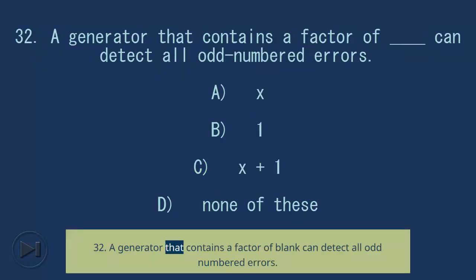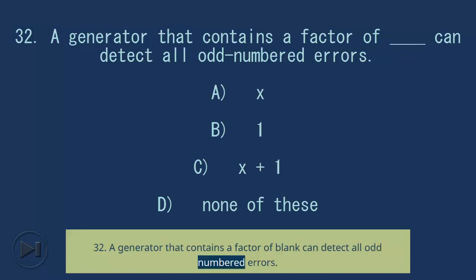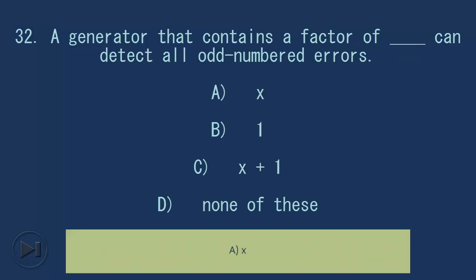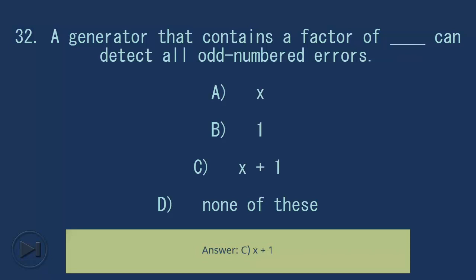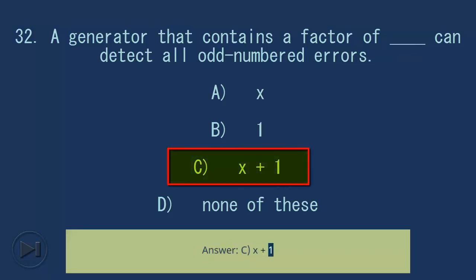Question 32: Cyclic codes are special linear block codes with one extra property. A generator that contains a factor of blank can detect all odd-numbered errors. A) x, B) 1, C) x plus 1, D) none of these. Answer: C, x plus 1.